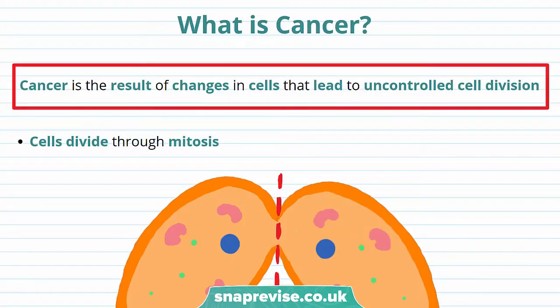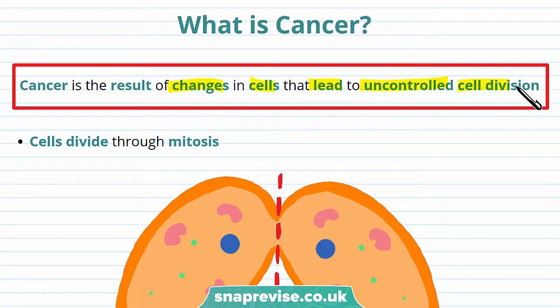You may have heard of cancer, but what is cancer? Well, cancer is a disease, and we can give the definition of cancer as the result of changes in cells that lead to uncontrolled cell division.